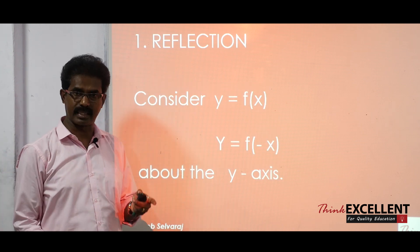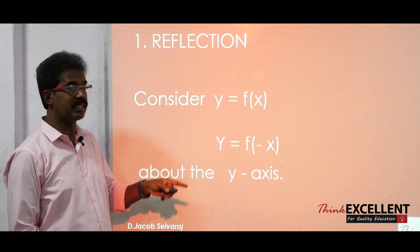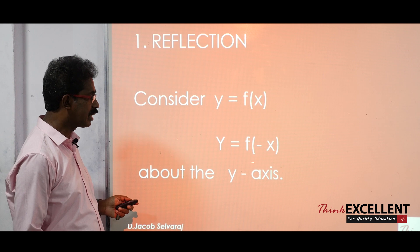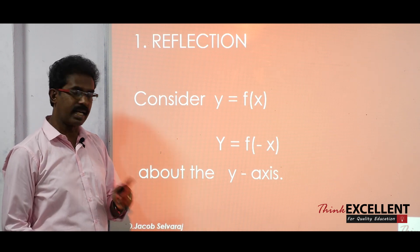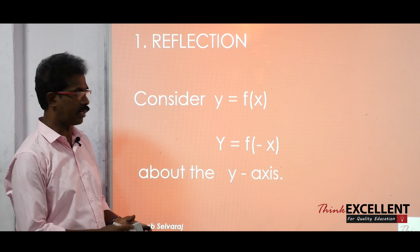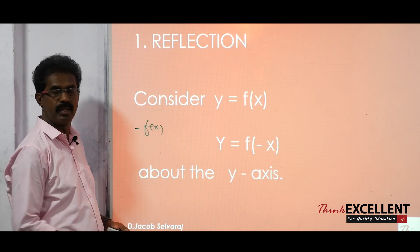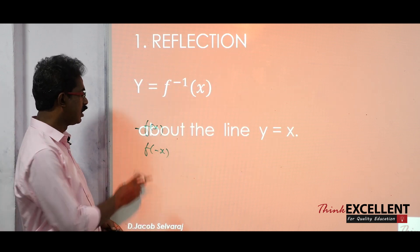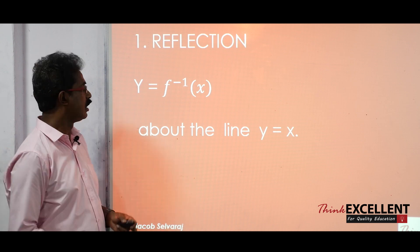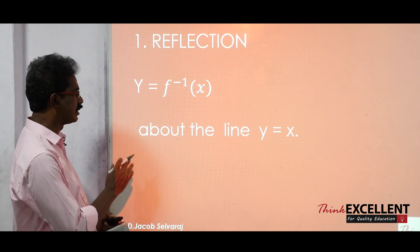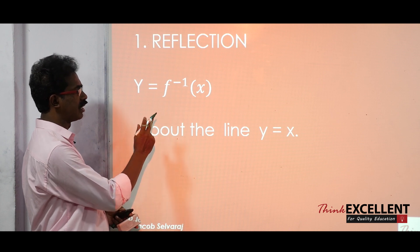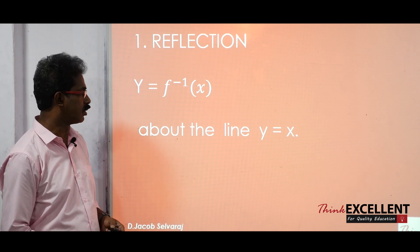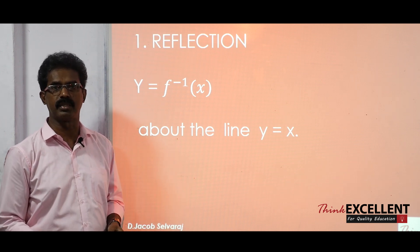Now reflection on the y-axis: f(x) is the given curve, and f(−x) is reflection on the y-axis. For the x-axis, the minus comes outside — that is minus f(x). For the y-axis, f(−x). And the third one is reflection on the line y equals x — that is f inverse of x.